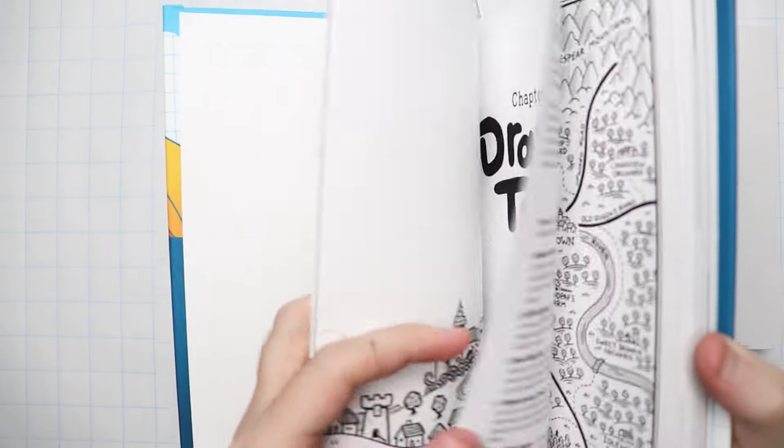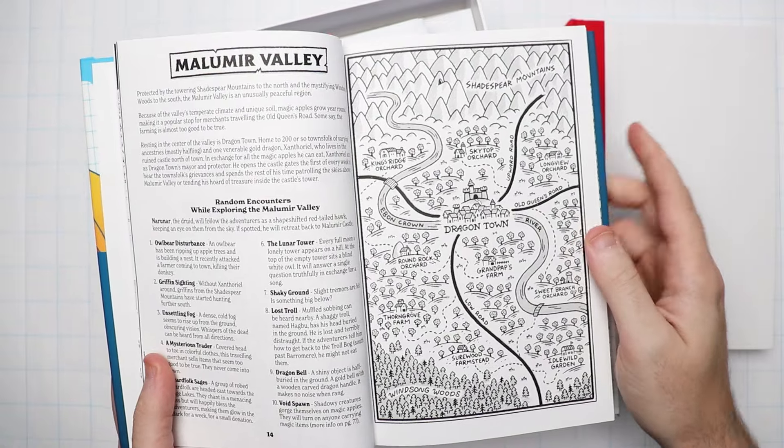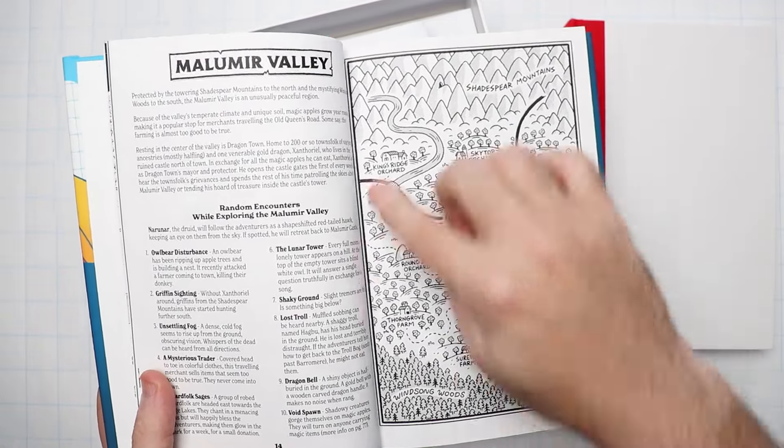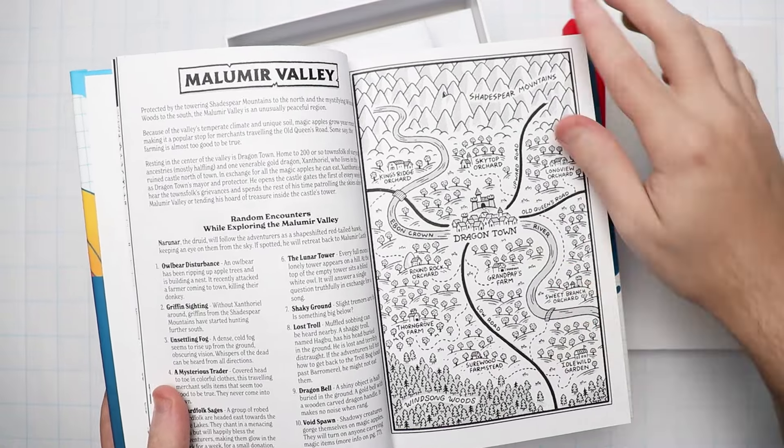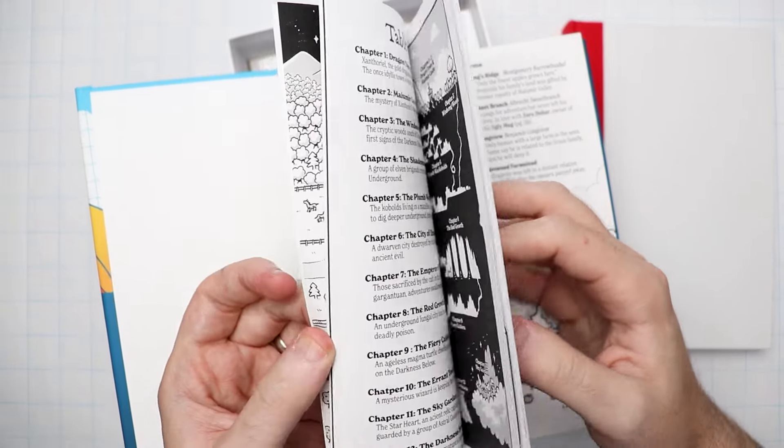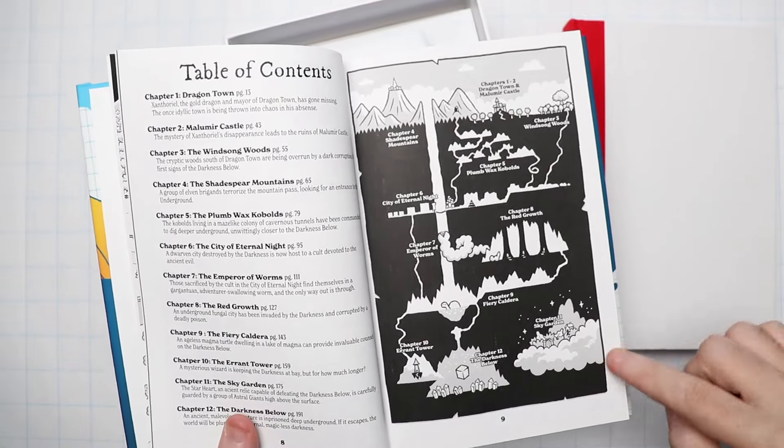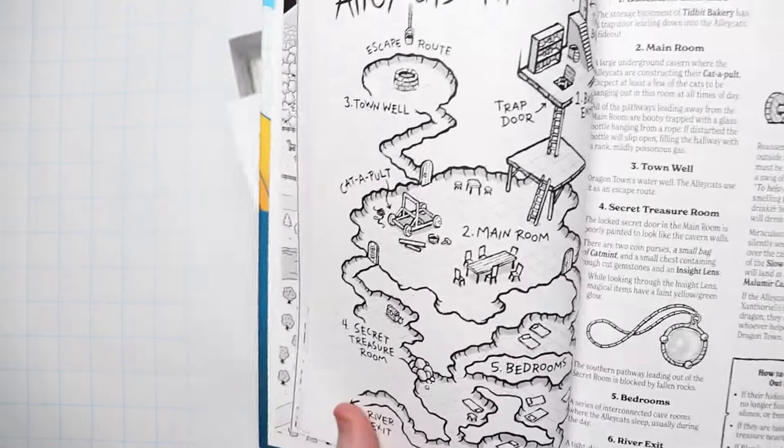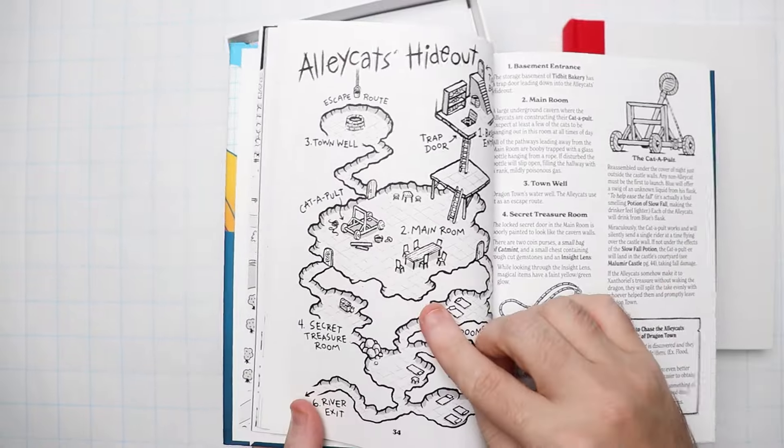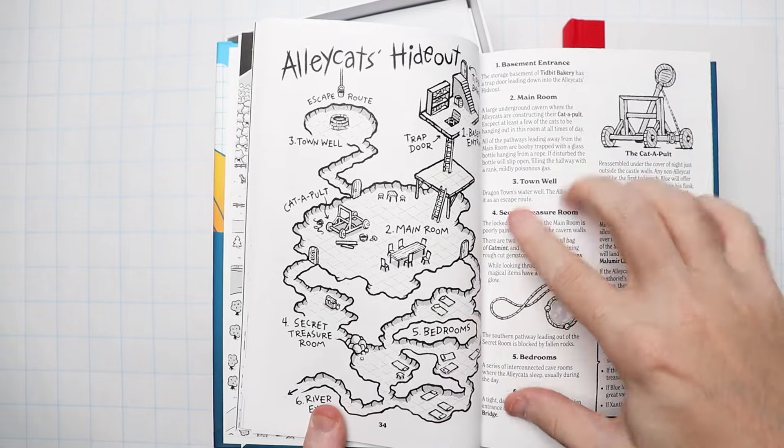So stuff like the map of Malomir Valley, so when the players are approaching Dragontown or exploring around Dragontown they'll have the map, or there's also the entire campaign map that shows the adventure through all 12 chapters or the player-facing version of the Alley Cats hideout. So in this map and inside the book there's a secret room.